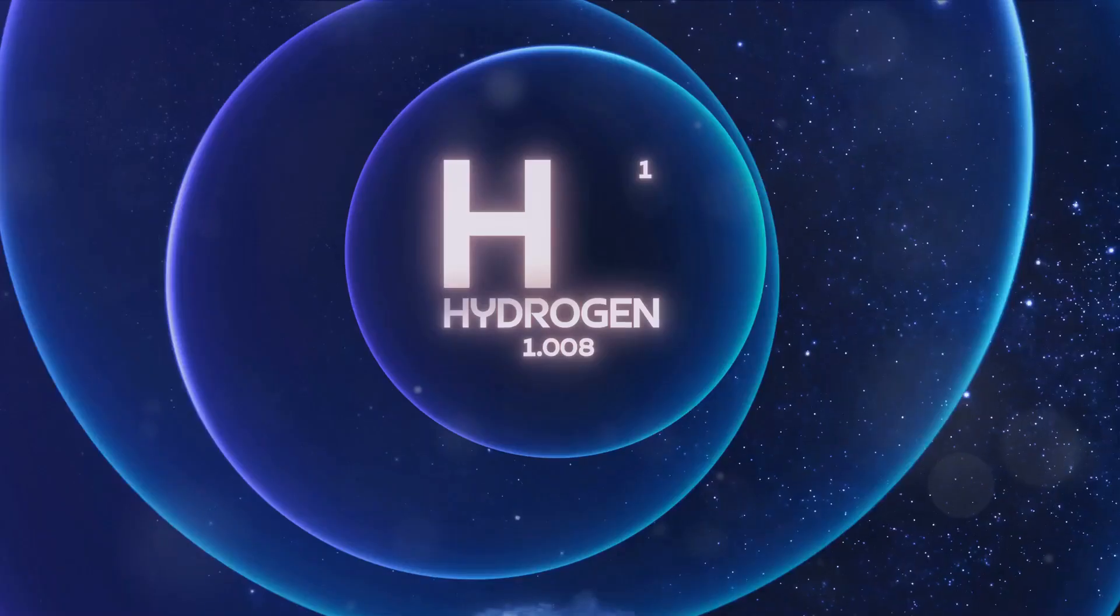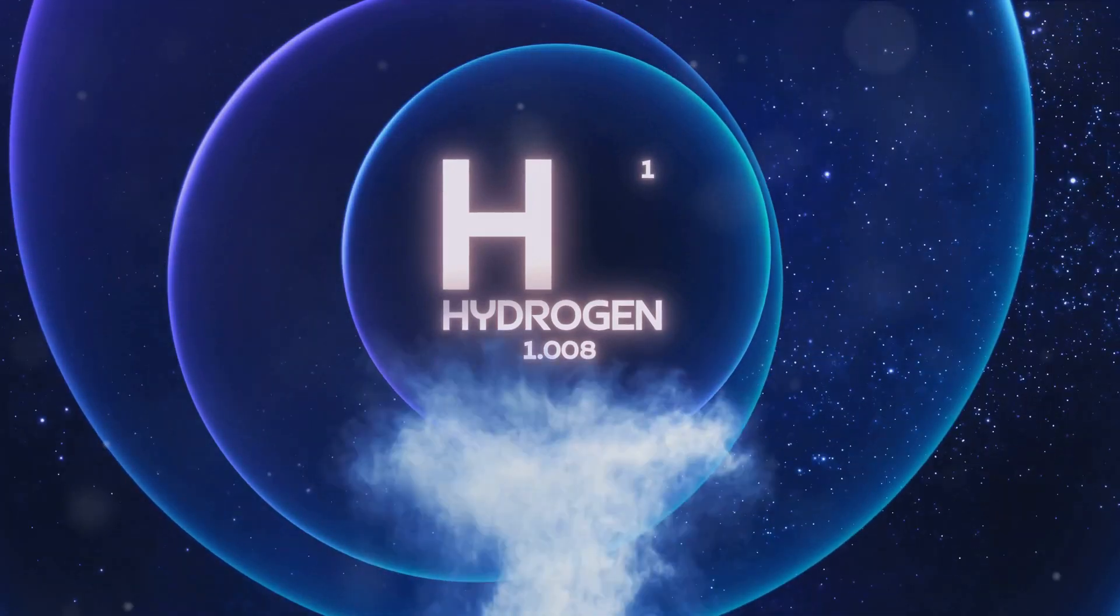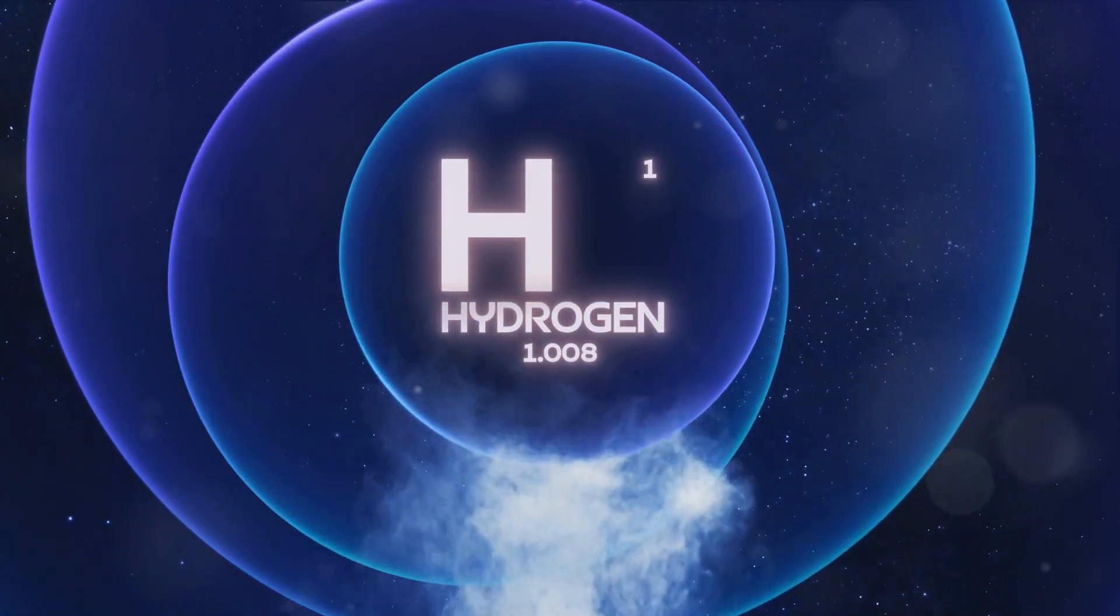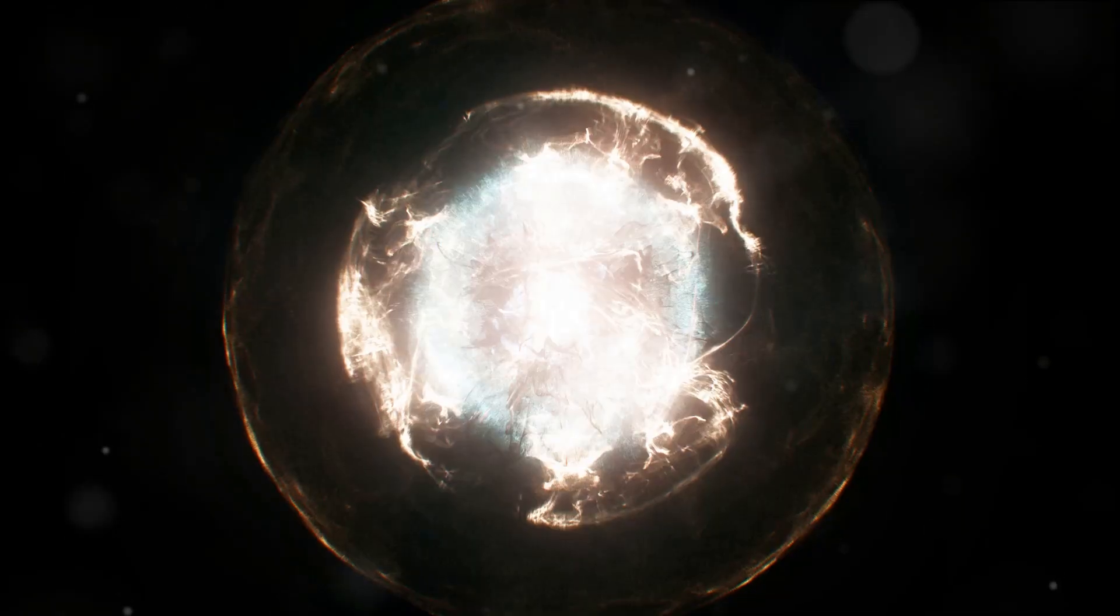The solar system began as a nebula, a swirling ball of dust and gas. Most of this gas was hydrogen, but there were also other elements formed by fusion in other stars.